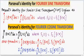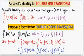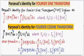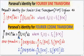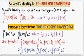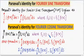The Parseval's identity for the Fourier Cosine Transform (FCT) is written as the integration from zero to infinity of the modulus of f(x) squared dx, equal to the integration from zero to infinity of the modulus of Fc(s) the whole squared ds, where Fc(s) is equal to the Fourier Cosine Transform of f(x).